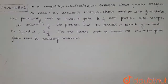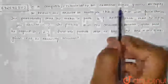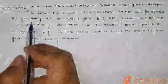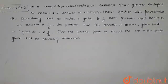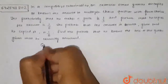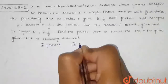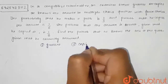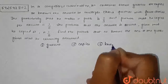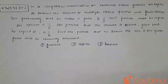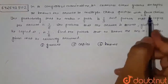Hello friends. Our question is: the probability that in a competitive examination, an examinee either guesses, copies, or knows the answer. So there are three cases: the first case is he guesses the answer, the second case is he copies the answer, and the third case is he knows the correct answer to the multiple choice question with four choices.